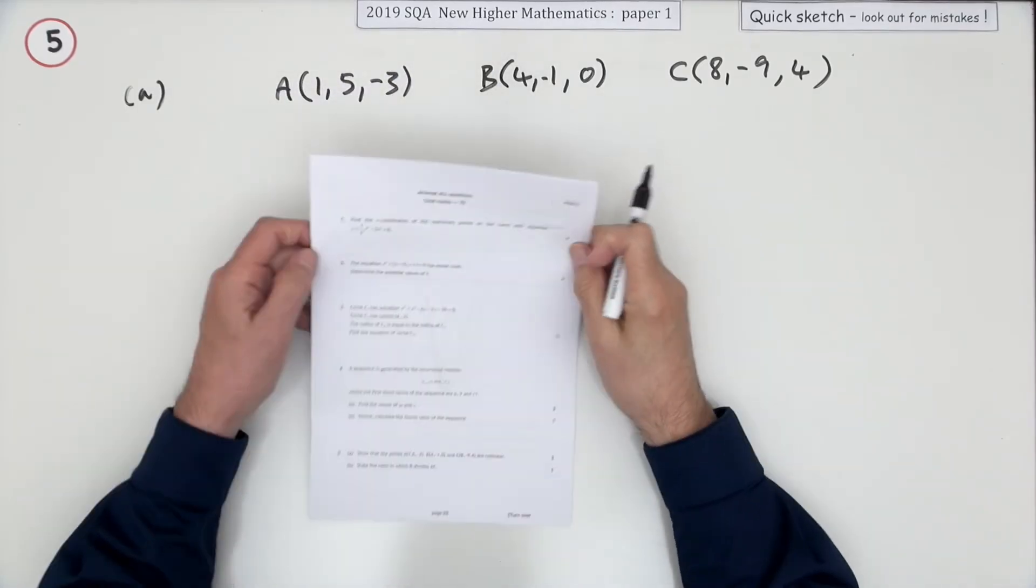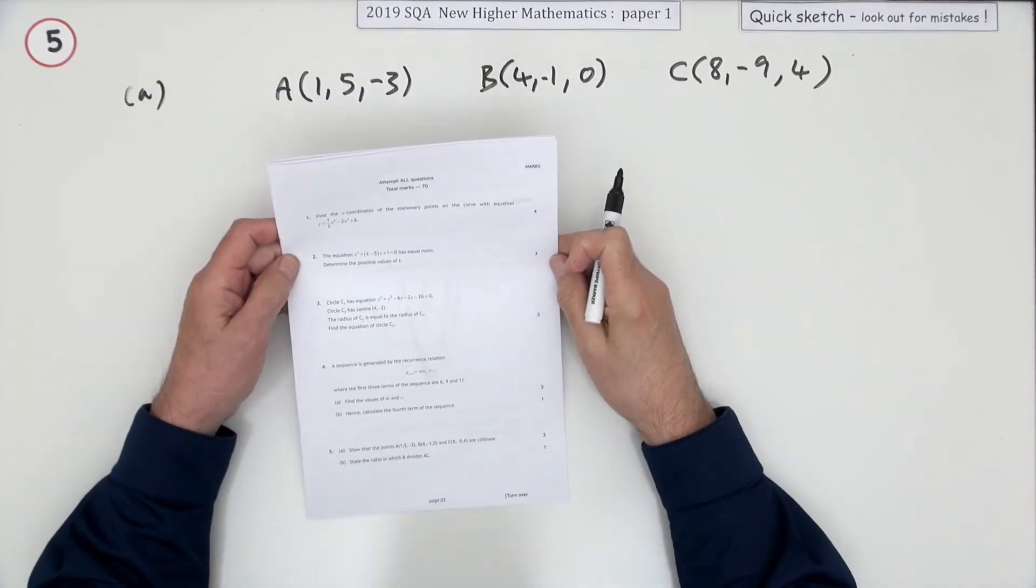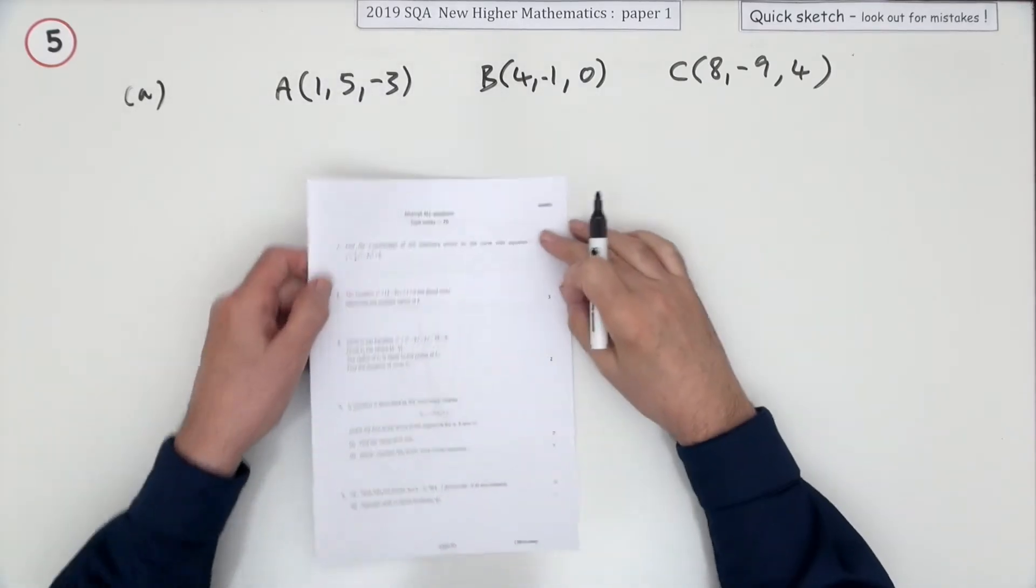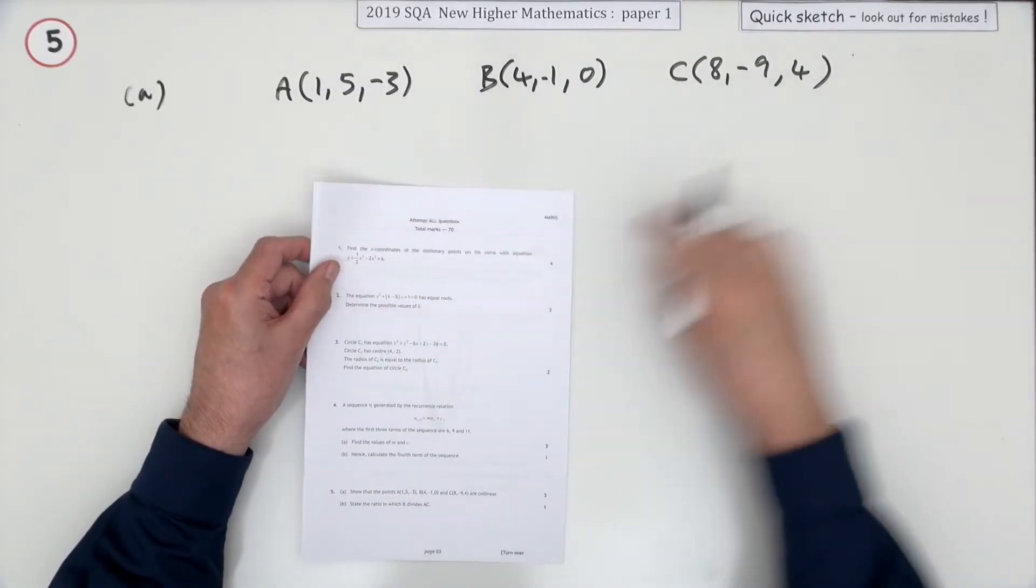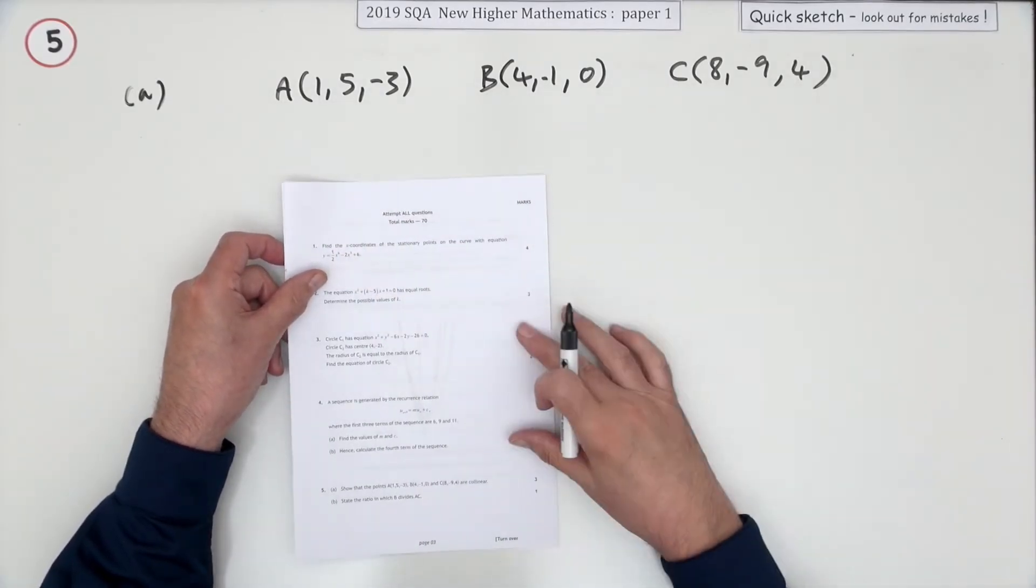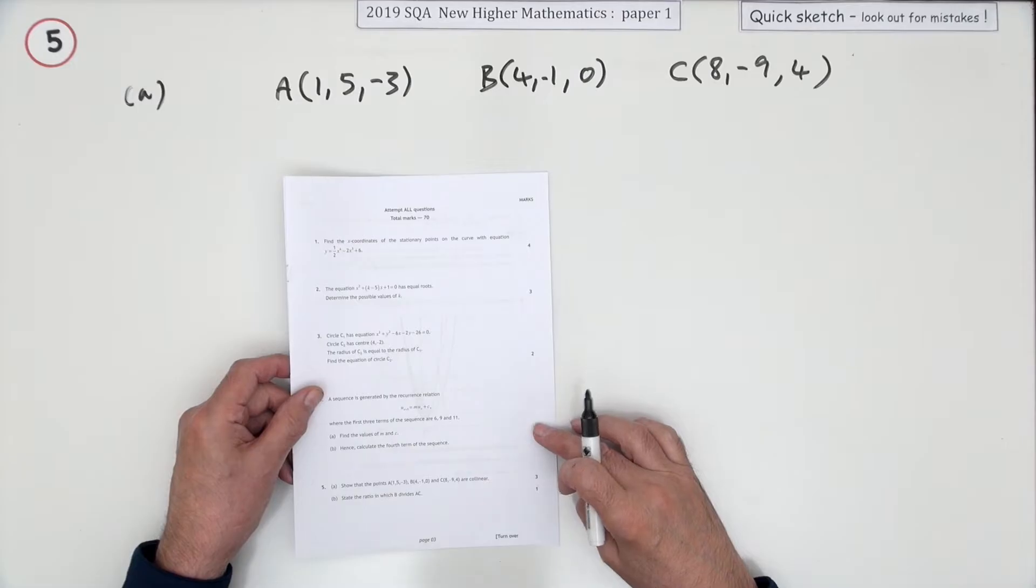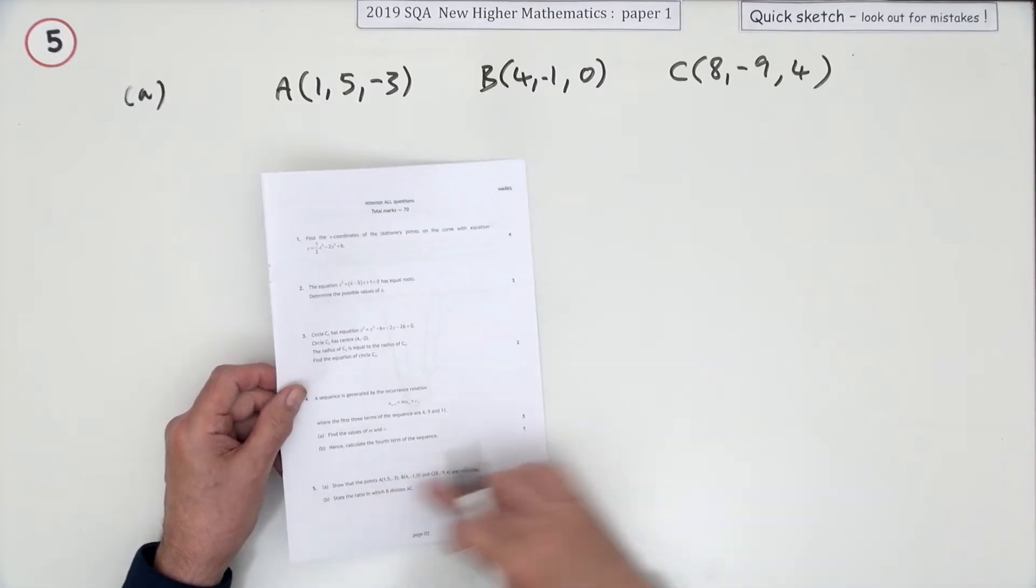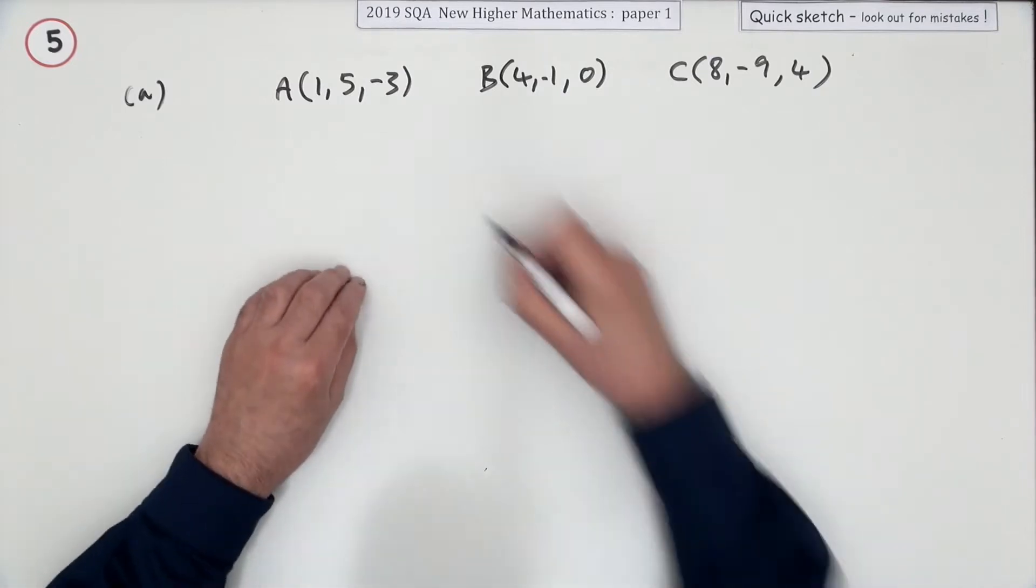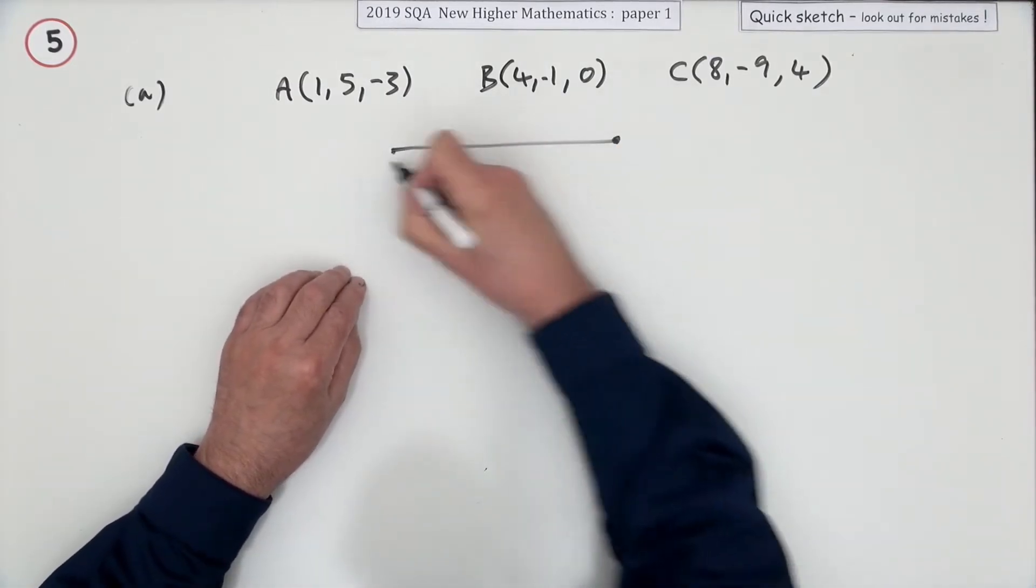Number five from the 2019 Higher Maths paper one. Another collinearity question - do these points lie in a straight line? Show that these points are collinear. There's also a second part: state the ratio in which B divides AC. So these three points are meant to lie in a straight line.